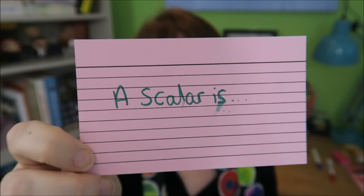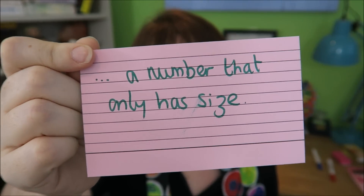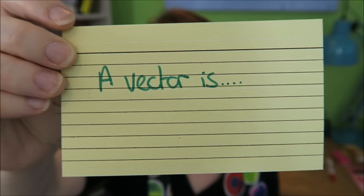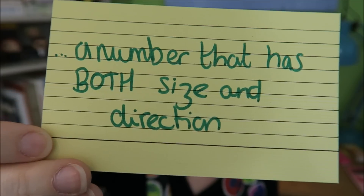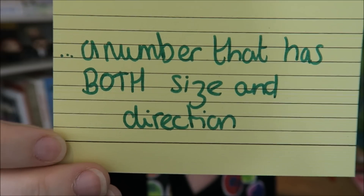A scalar quantity is something that has a number only - just a number, no direction. A vector is a number that has both size and direction - the one that is telling you where it is going and how fast it is going.